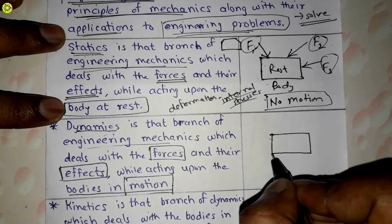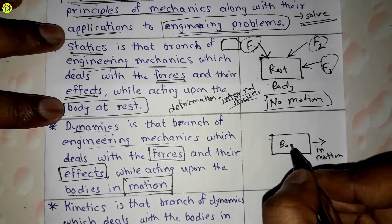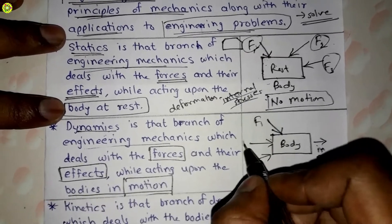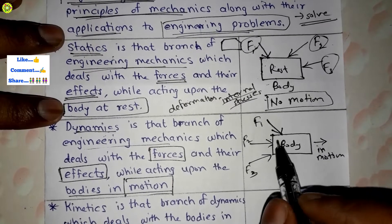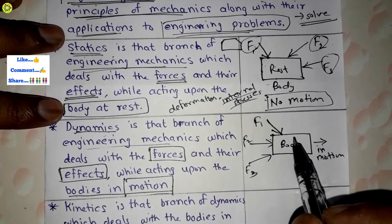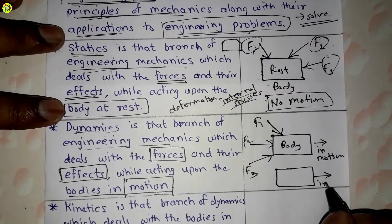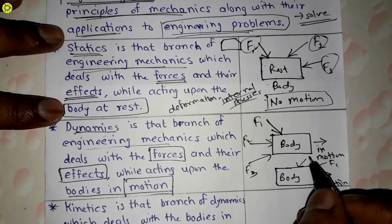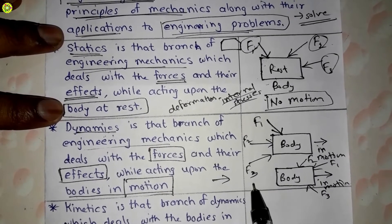Suppose this is a body which is in motion in one direction, and forces F1, F2, F3 act on it. Due to these forces there will be motion in the body, and also there will likely be deformation and internal stresses generated in the body. In another case, the body is in motion in one direction and the forces act in the opposite direction, restricting the motion — that is, there is retardation as the effect on the body.